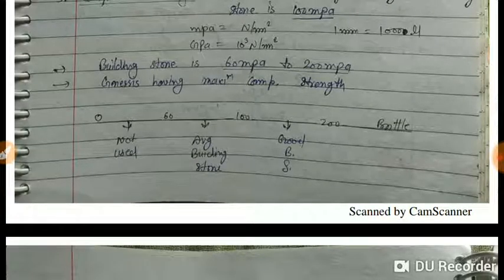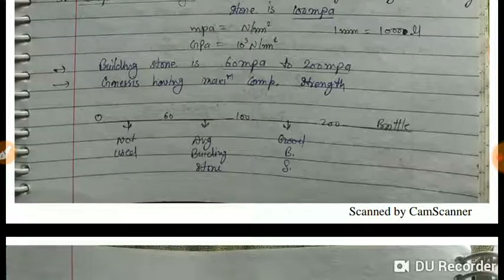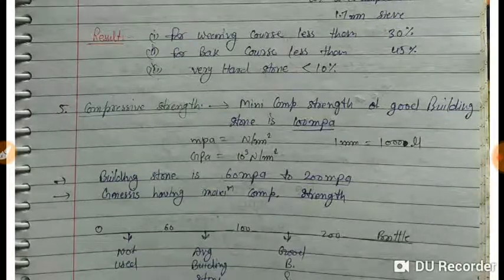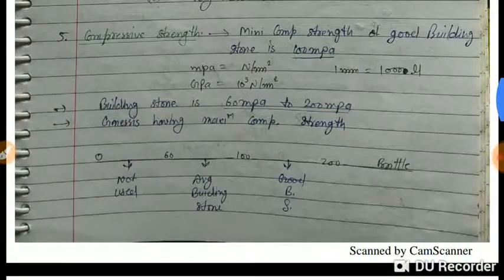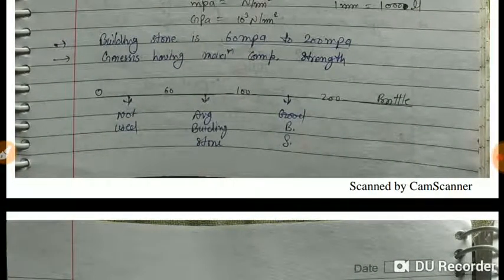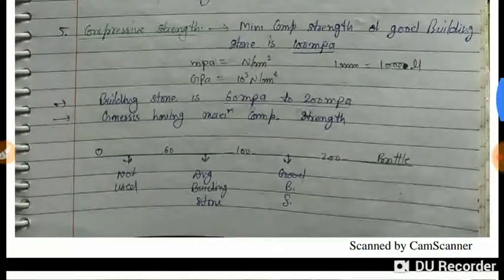Greater than 200 MPa compressive strength means the stone is brittle — it has maximum compressive strength but if a sudden load is applied it will fracture. The minimum compressive strength should be 60 MPa and maximum around 200 MPa. For normal building work, 100 MPa compressive strength is used.